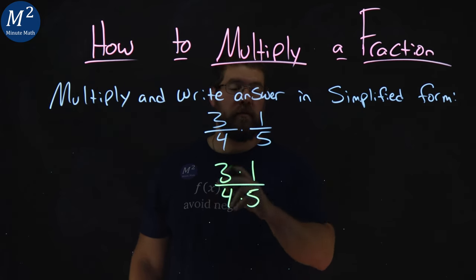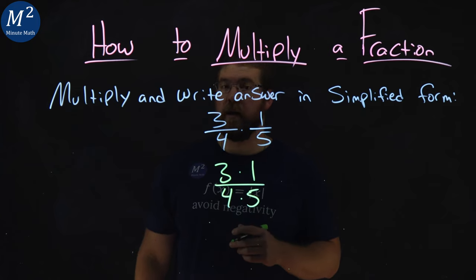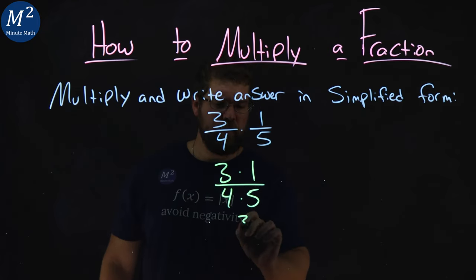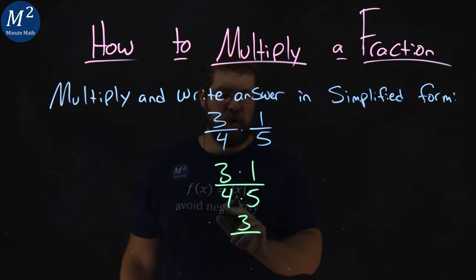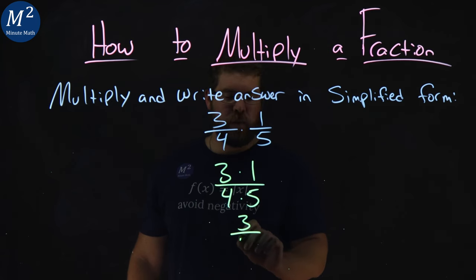So now I simplify across the numerator and simplify across the denominator. 3 times 1 is 3. 4 times 5 in the denominator is 20.